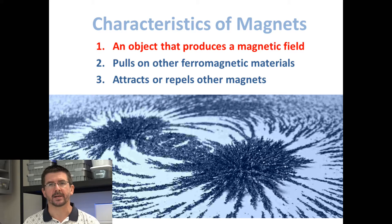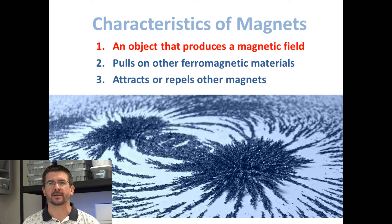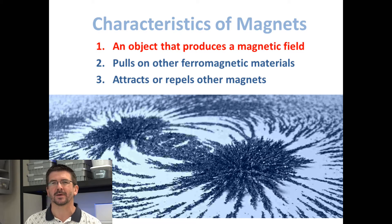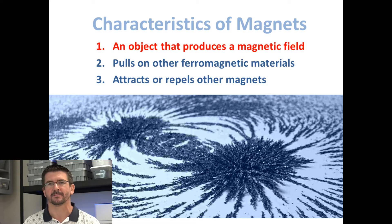These are called permanent magnets, and then we have what are called temporary magnets, and these are just objects that produce magnetic fields sometimes or for a little while, or maybe a magnetic field that can be activated and deactivated. We'll actually make an example of a temporary magnet in one of our activities.